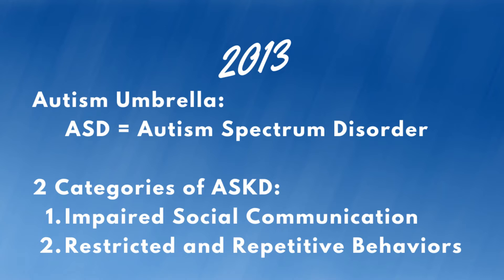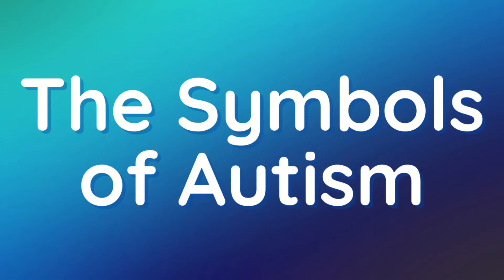So, history aside, let's look at some of the symbols. In the comments below, I want you to put what symbol first comes to mind whenever you think about autism. I'm just curious — it'll be interesting to see how many have specific symbols they've seen, or even colors, because I'm finding that as well.